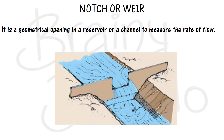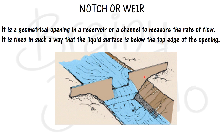As you can see in this diagram, the part which actually obstructs the fluid flow and allows the fluid to flow through this particular opening is called a notch or a weir. The main difference between the notch and a weir is that a notch is made up of a metallic object whereas a weir is made up of concrete masonry. This notch and weir is fixed such that the top surface of the fluid should always be below the top edge of the notch.